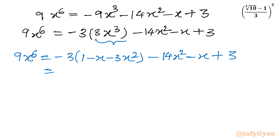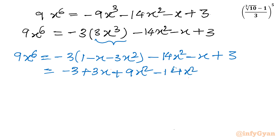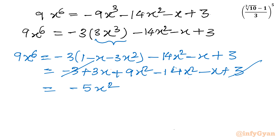Let's simplify for the last time. We get minus 3 plus 3x plus 9x square, then minus 14x square, minus x plus 3. The constants minus 3 and plus 3 cancel. Collecting like terms: 9 minus 14 gives minus 5x square, and 3x minus x gives plus 2x. So 9x power 6 equal to minus 5x square plus 2x.